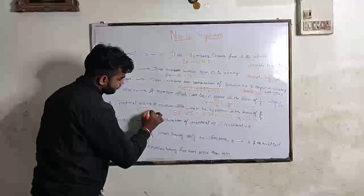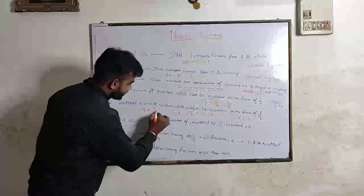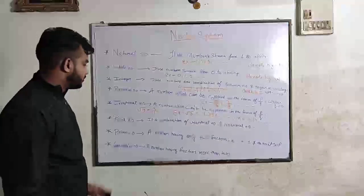Because its value is 3, which is the rational number in the form of P by Q. Example: 3 by 1. Clear.